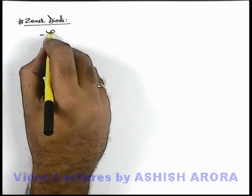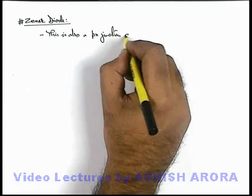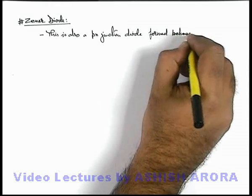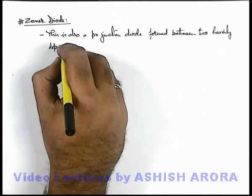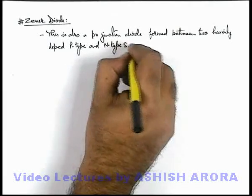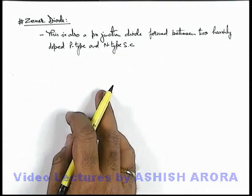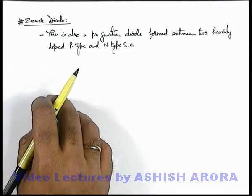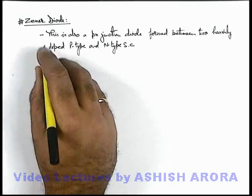About Zener diode we can write that this is also a p-n junction diode formed between 2 heavily doped p-type and n-type semiconductors. Basically a normal p-n junction diode is just a junction between a p-type and n-type semiconductor, and Zener diode is specifically made. The very first point is it is formed between 2 heavily doped p-type and n-type semiconductors.